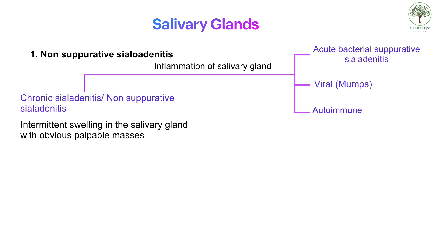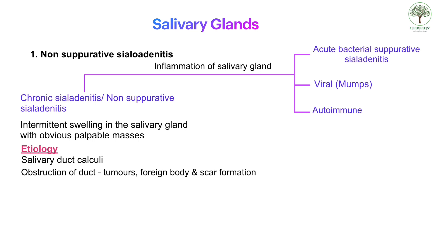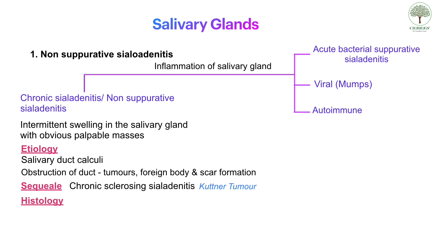The etiology for this is usually a salivary duct calculi, obstruction of the duct due to tumors, foreign body, and scar formation. If it is left untreated, it can lead to chronic sclerosing sialadenitis, which is also known as Kuttner's tumor.